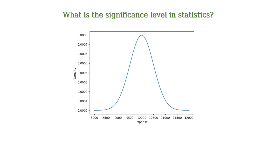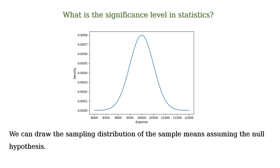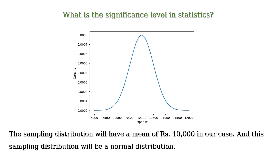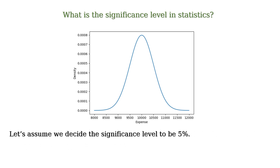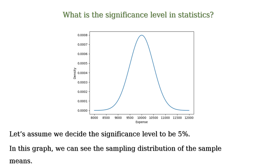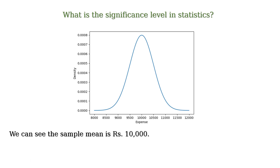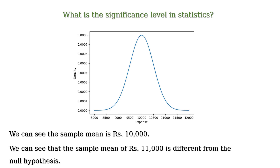At this point we can draw the sampling distribution of the sample means assuming the null hypothesis. So the sampling distribution will have a mean of Rs 10,000, and this sampling distribution will be a normal distribution. Now the sample mean of our sample is Rs 11,000. From the graph we can see that the sample mean of Rs 11,000 is different from the null hypothesis mean of Rs 10,000.